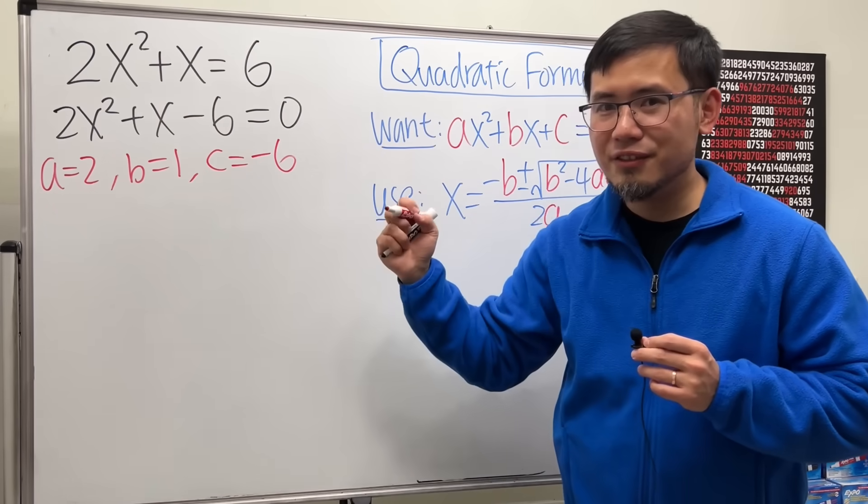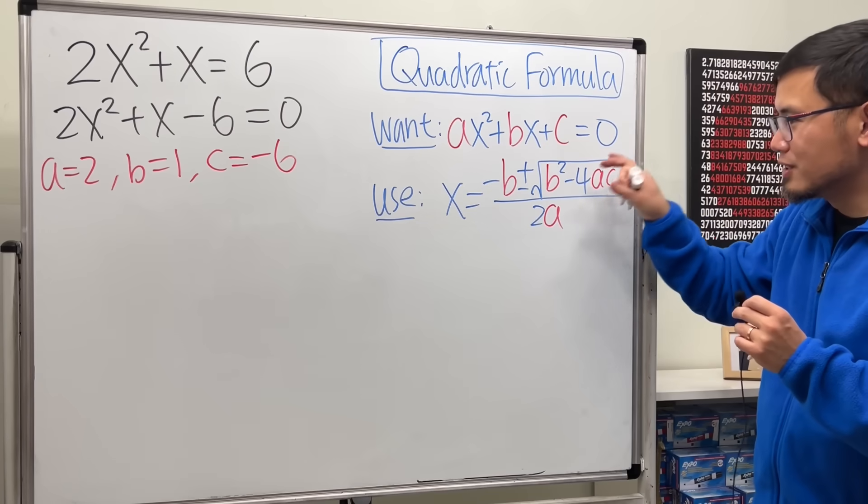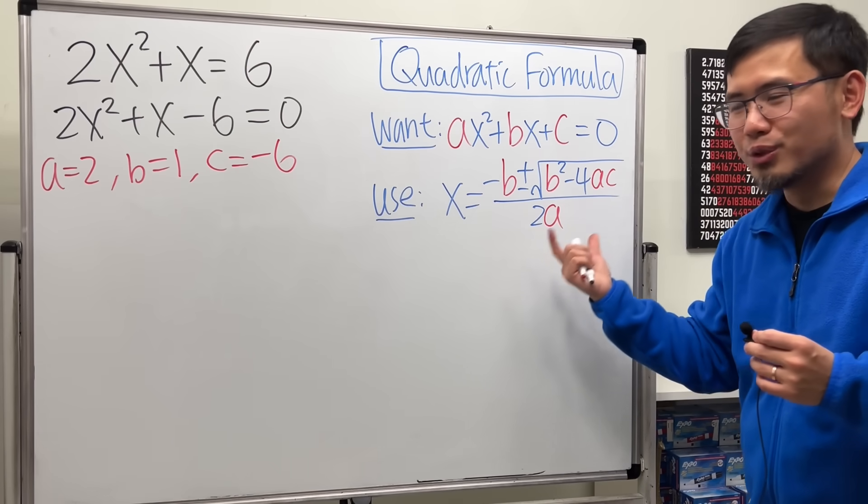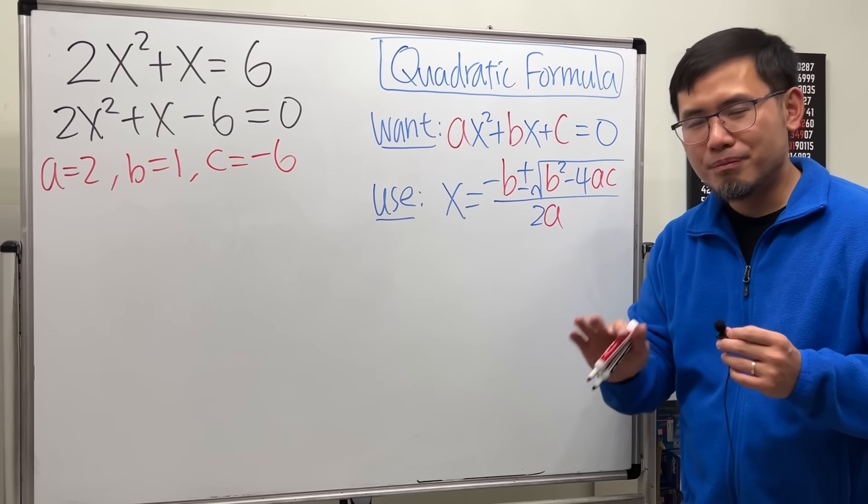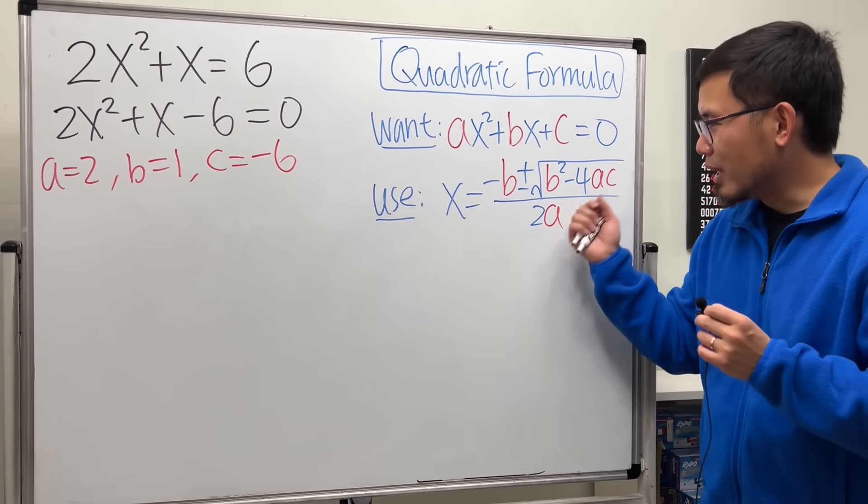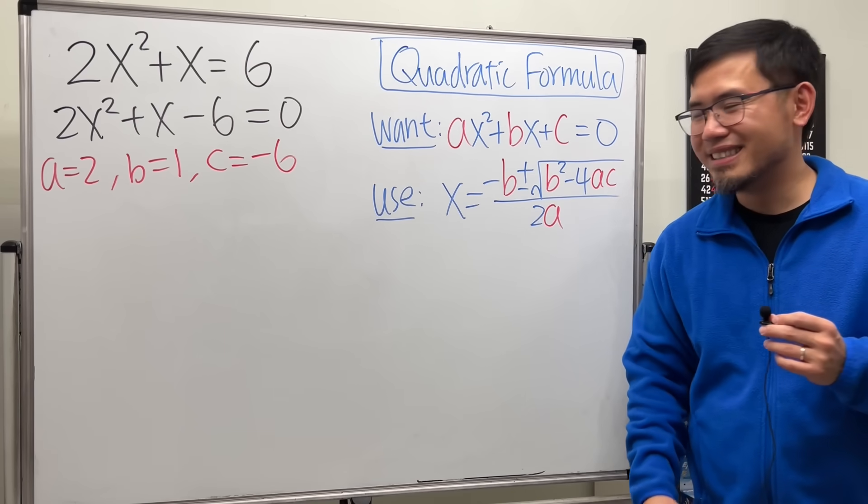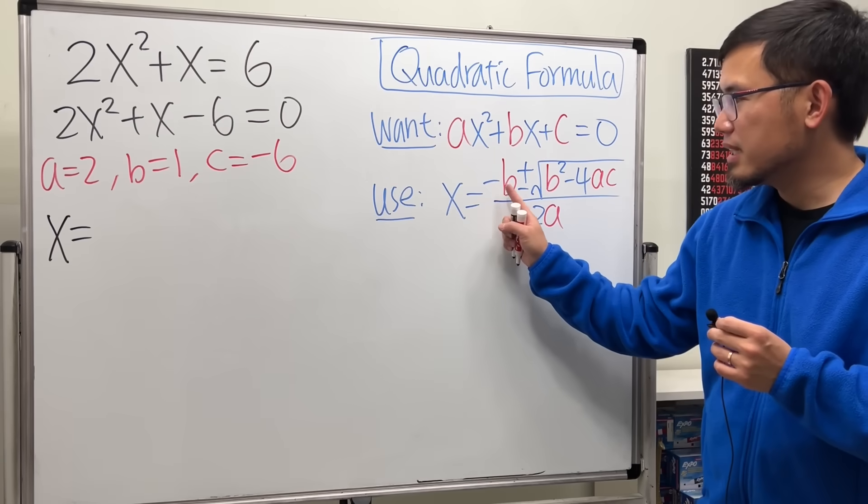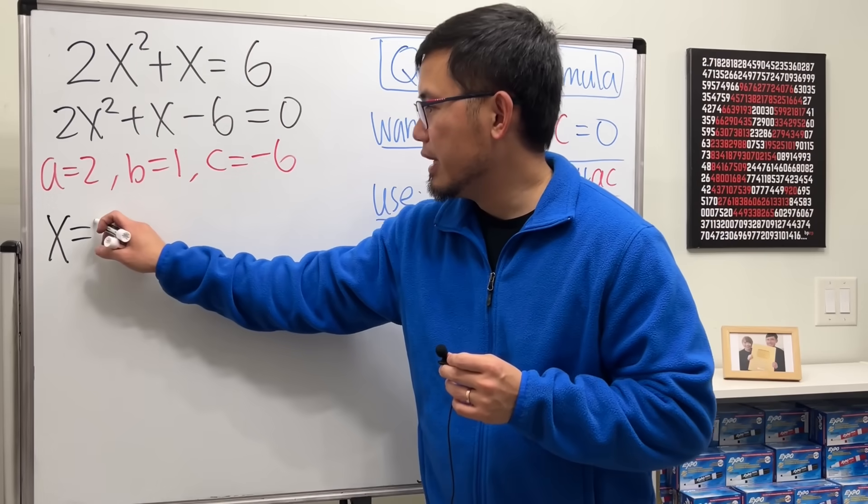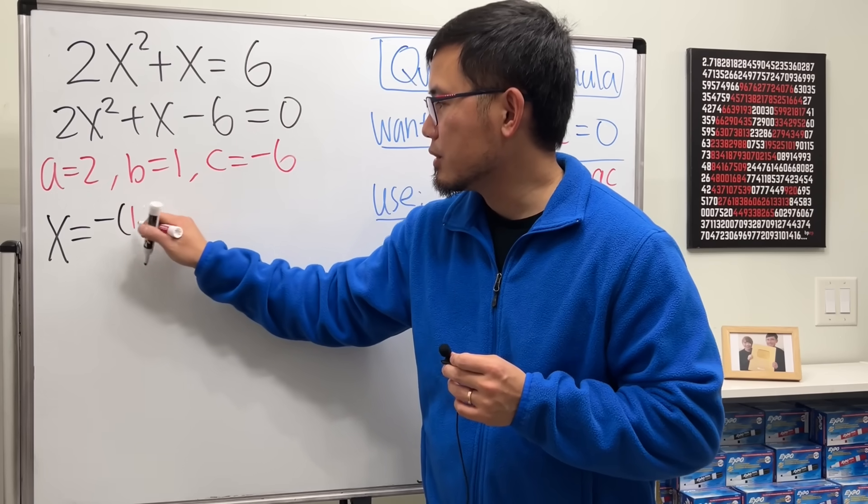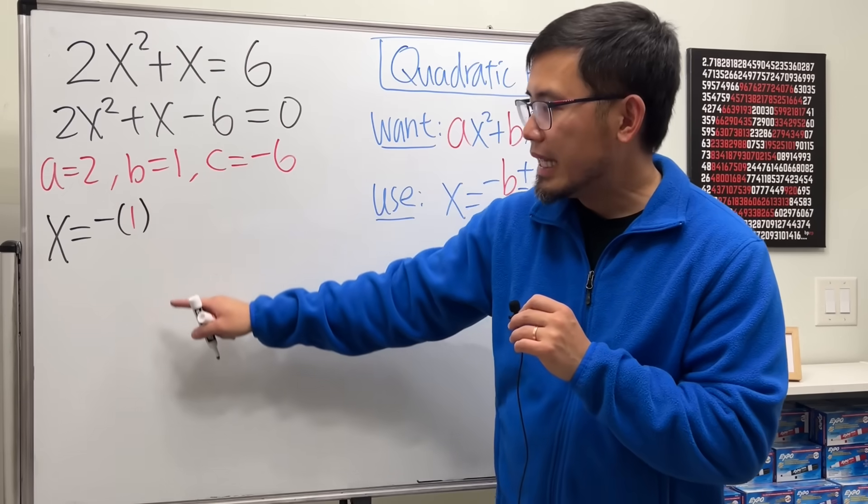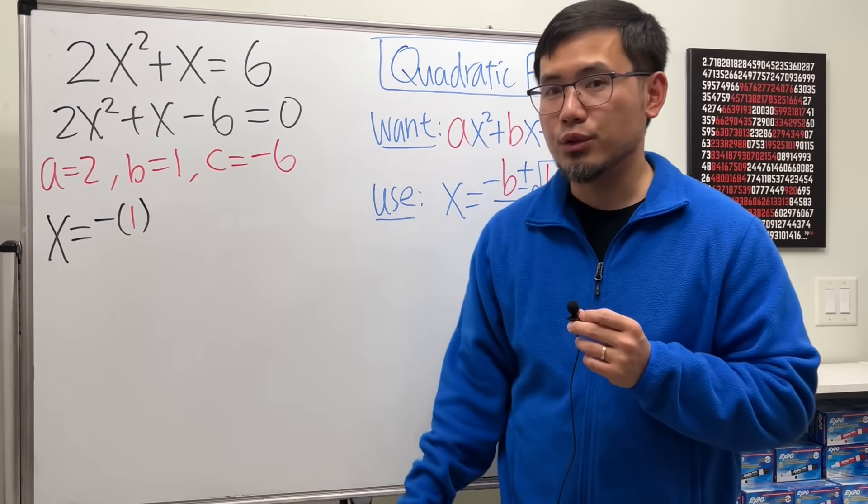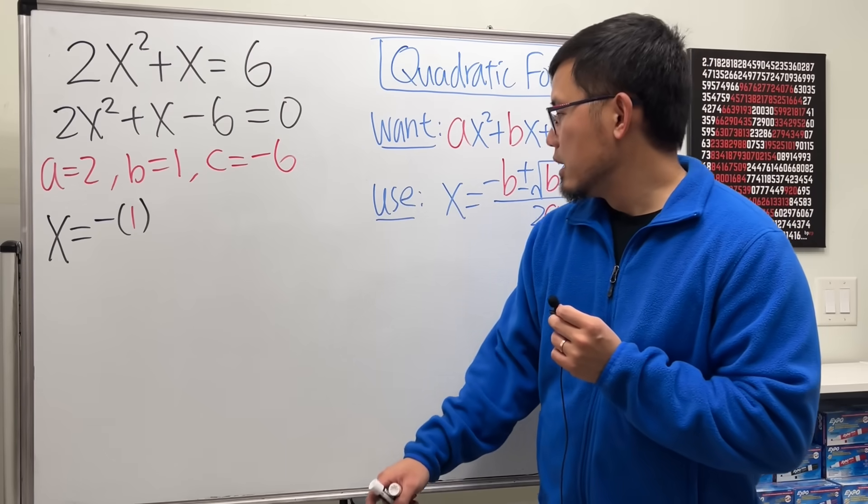Now we have the a, b, and c values. We can just throw them into this formula. I know this is a big formula, especially when you see it for the very first time. But just relax. Practice a few times, you can get it. x equals negative b. So we have negative b is 1, so just put that down. And have a good habit of opening the parentheses whenever you're throwing numbers into the formula.